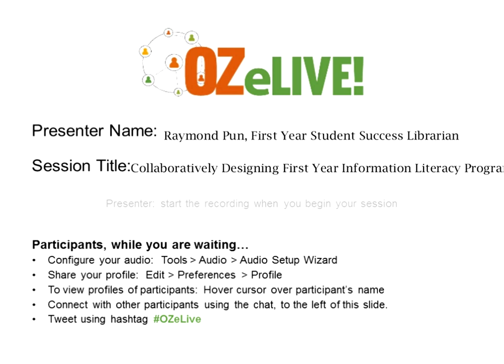Hi everyone. Thank you for joining this session and for being part of this virtual experience with all of us from all over the world. My name is Raymond Pun. I'm the first-year student success librarian at Fresno State, in California in the United States. Today I'm going to be talking about how you design a first-year information literacy program using Fresno State as a case study, in a collaborative approach, and as part of a national conversation in designing information literacy to support students in college, as well as perhaps high school students or others in transition.